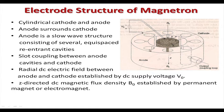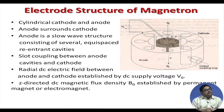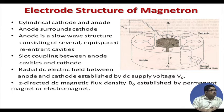The anode is a slow wave structure with several periodically equispaced re-entrant cavities. If we have any wave propagation direction with periodic structures, it becomes a slow wave. Normally in a waveguide, waves are fast waves with phase velocity greater than the velocity of light, but if we put periodic disturbances we can slow that wave. The re-entrant cavities are disturbing the wave and making it a slow wave structure.